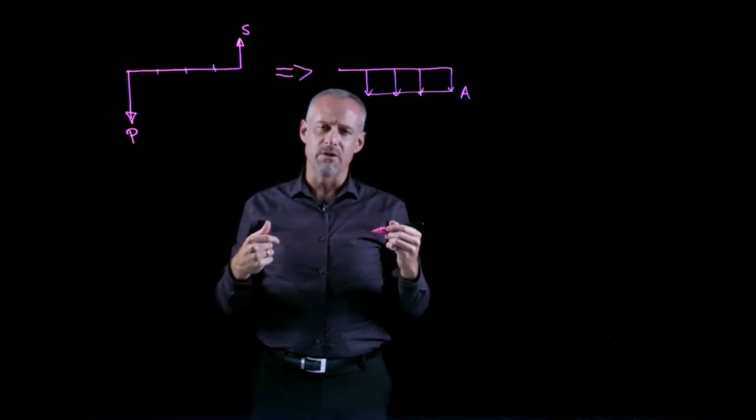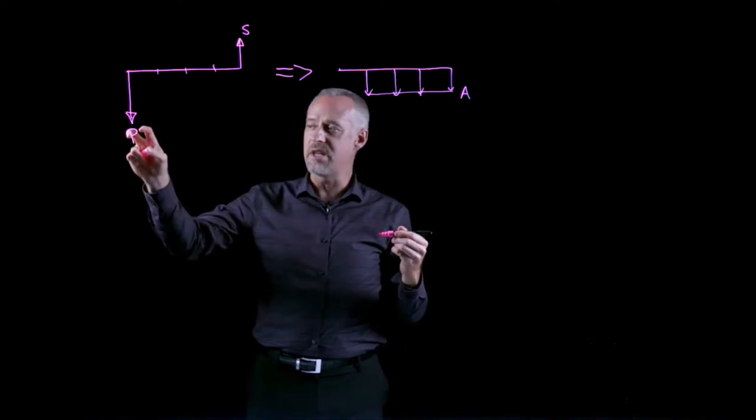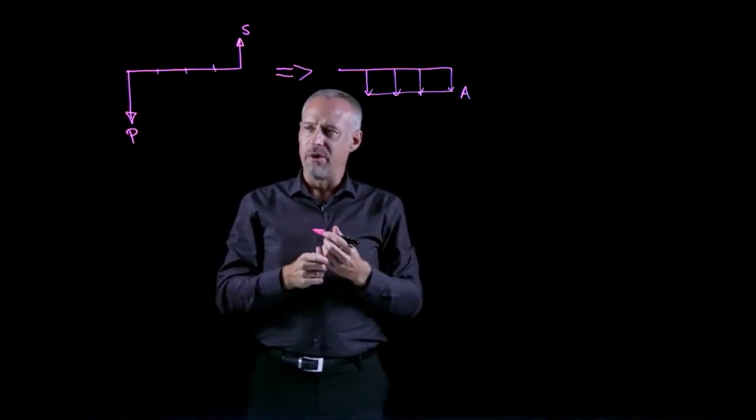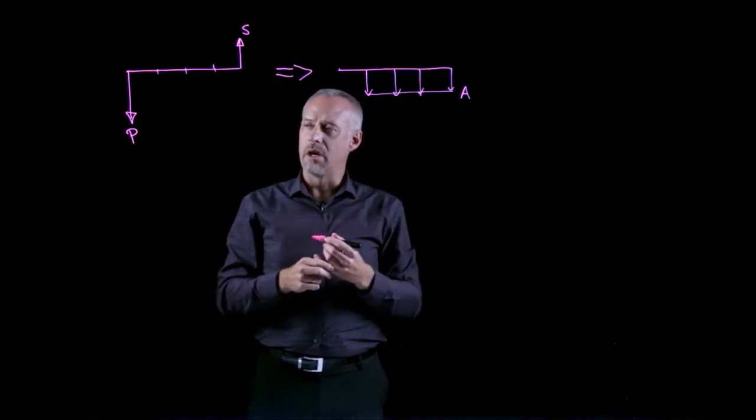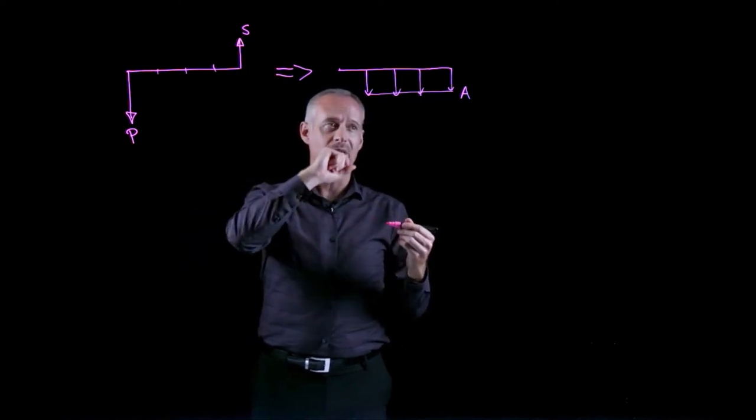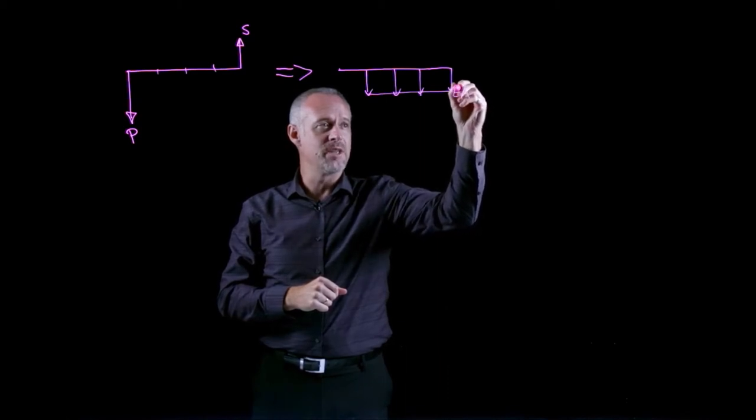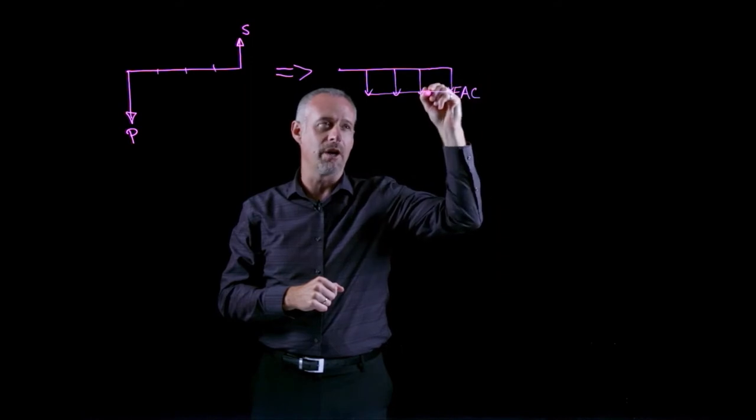So in the past, we used a factor called the capital recovery factor when we were converting a p into an a. We introduce a new formula in this section of the course where we incorporate the s into the determination of a, and rather than just a, we actually call this now the EAC, equivalent annual cost.